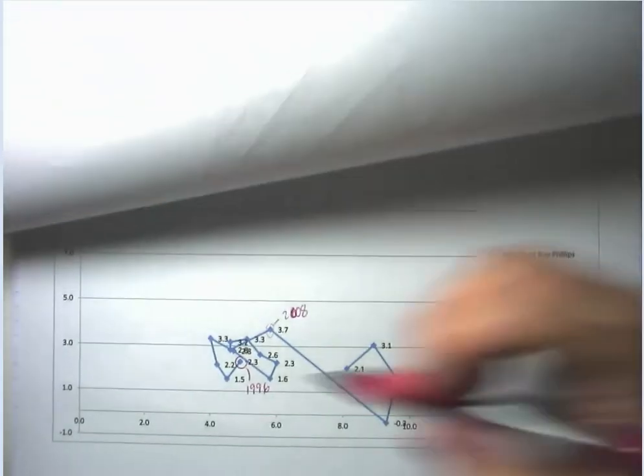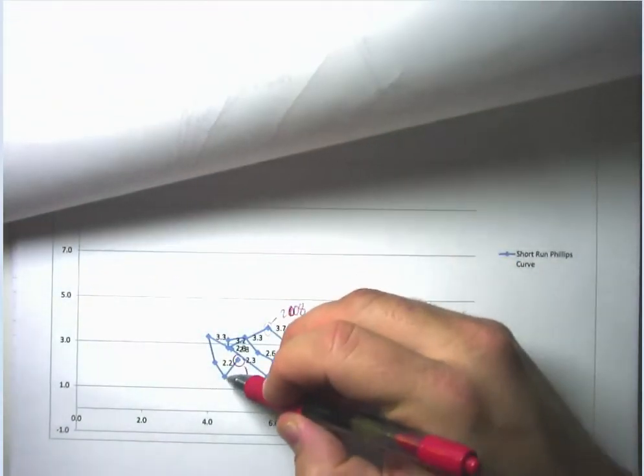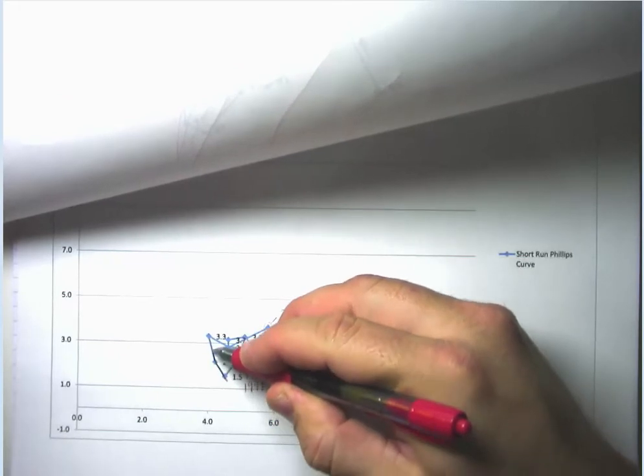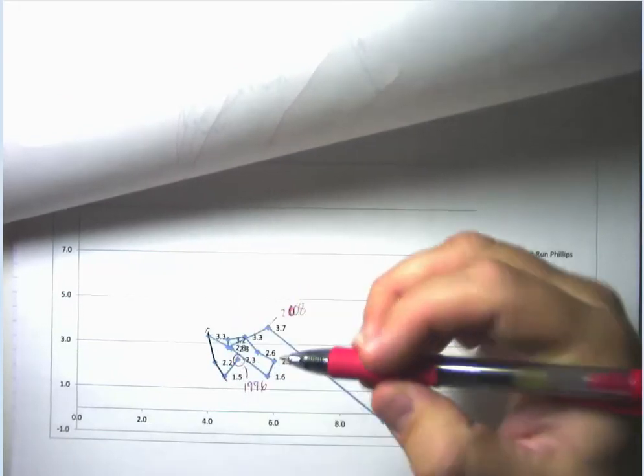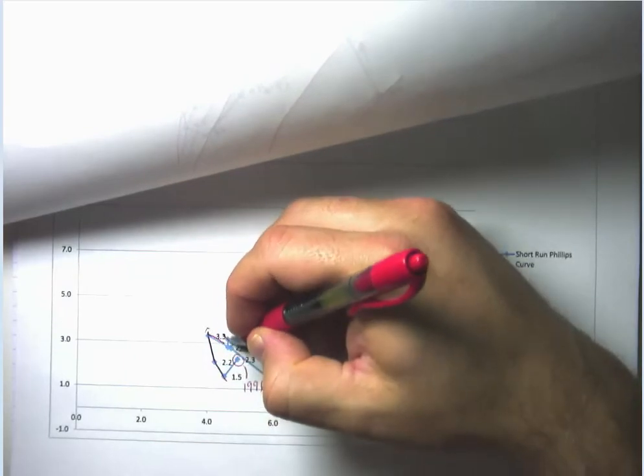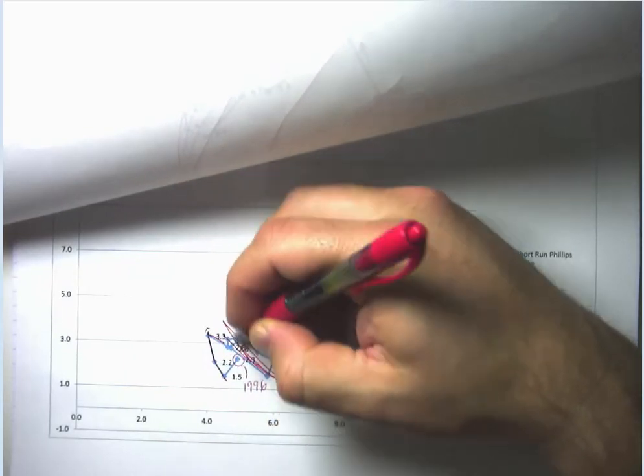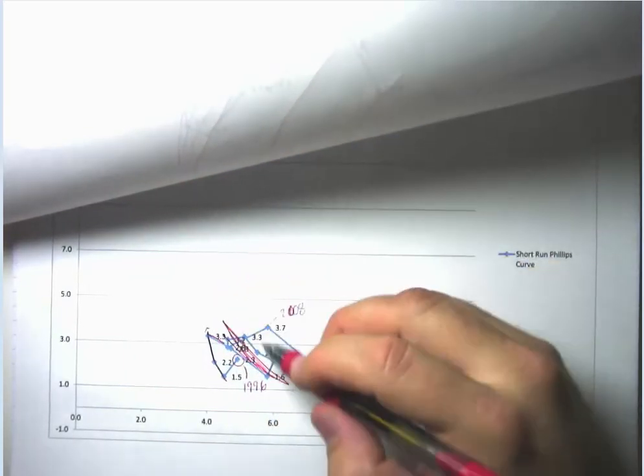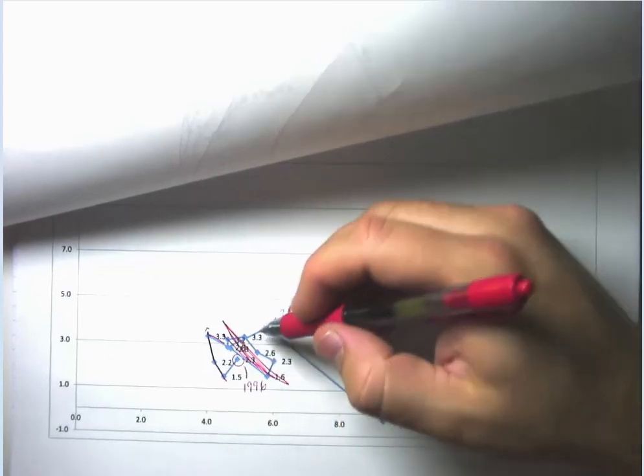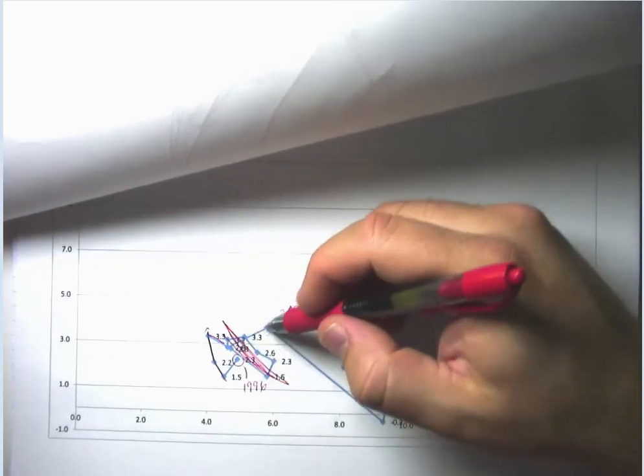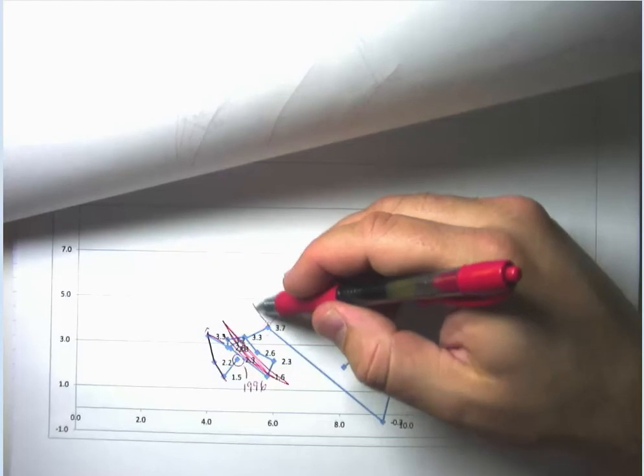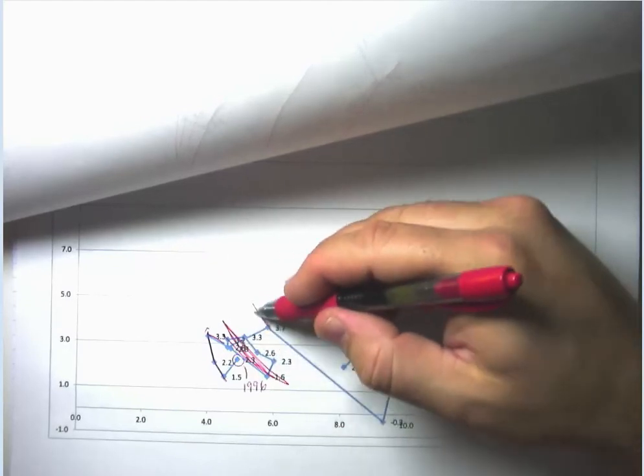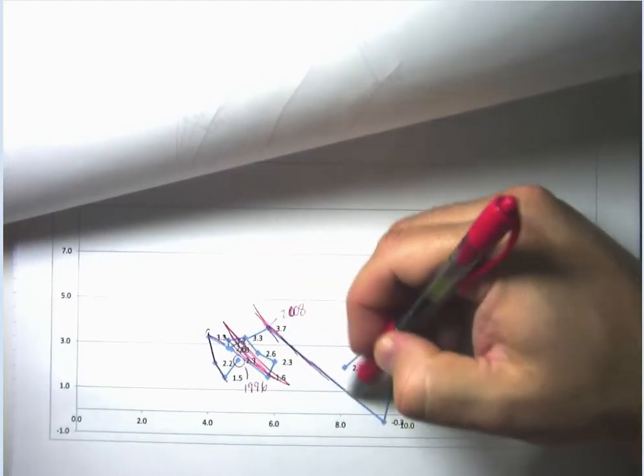So what happened to the tech boom of the late 90s? Well, we sort of start going up this Phillips curve again. Inflationary expectations start to rise. And you can see that we end up in a Phillips curve in this neighborhood. And then inflationary expectations are just starting to rise again at the tail end of the housing boom. And you can see that we can be on another Phillips curve out in this neighborhood.